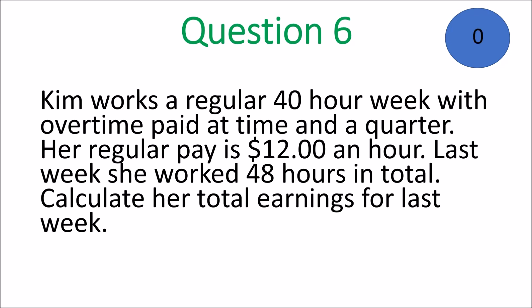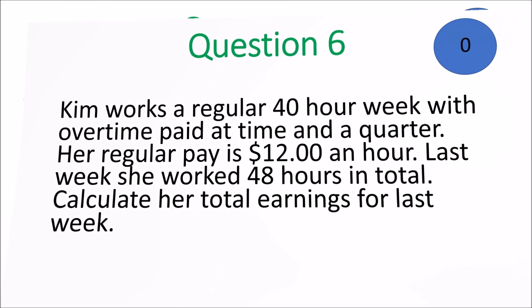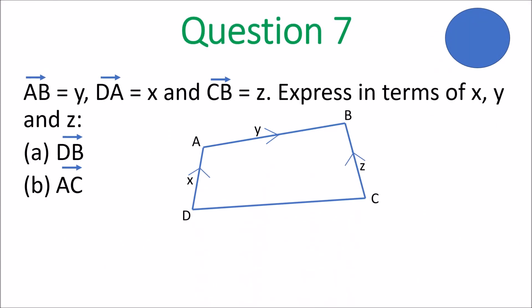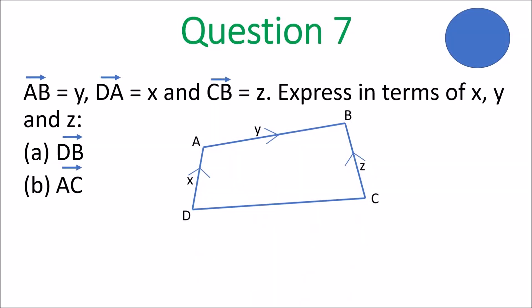And we move on to question 7. Vector AB is equal to y, vector DA is equal to x, and vector CB is equal to z. Express in terms of x, y, and z: (a) vector DB and (b) vector AC. Go ahead.